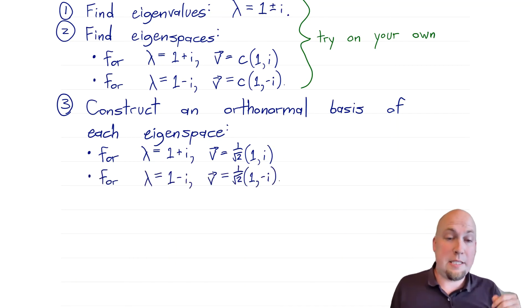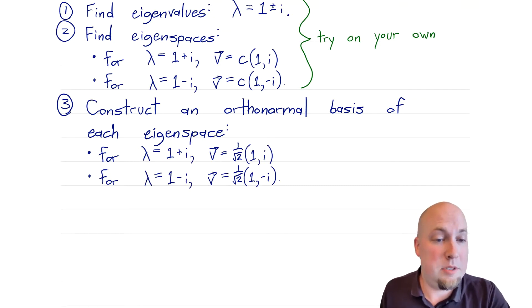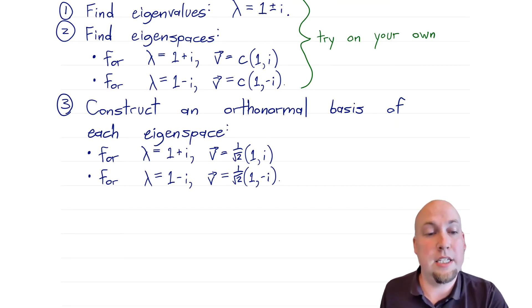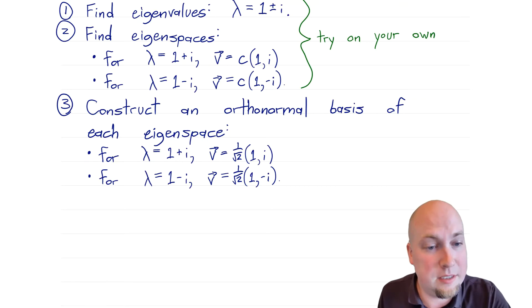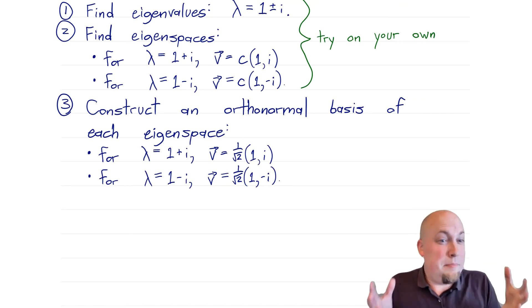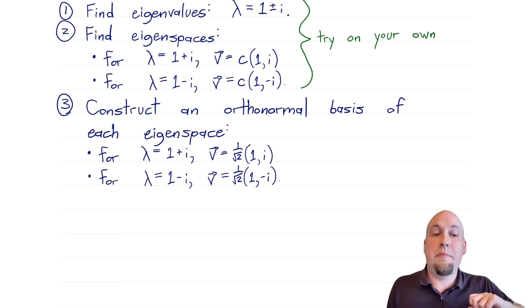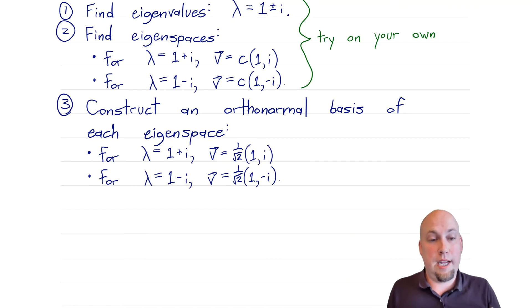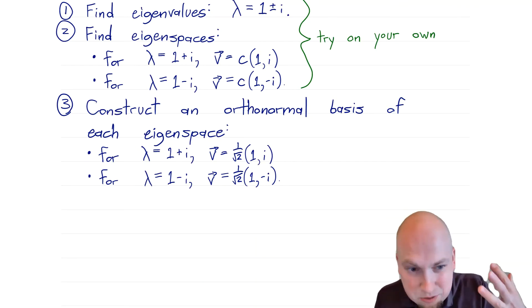For the other eigenspace, do the same thing — pick scalar 1/√2. You don't have to pick the same scalar, but it works here. So we get two unit vectors. And because of the spectral theorem, vectors coming from different eigenspaces will be orthogonal to each other — you can check that — and that's what makes the whole construction work.